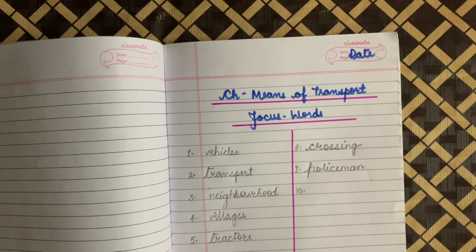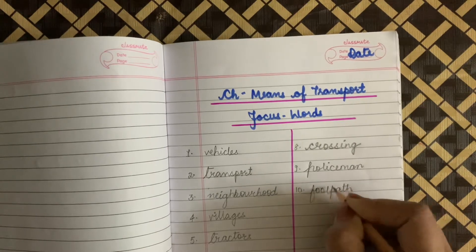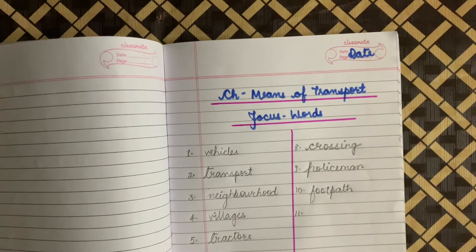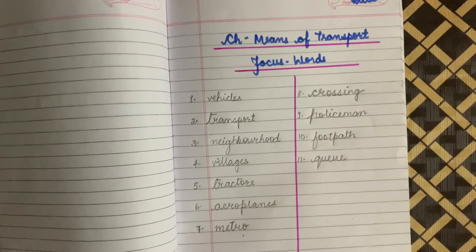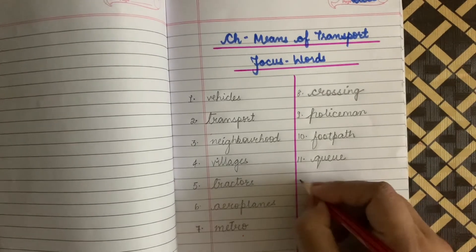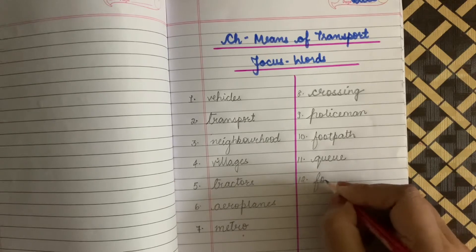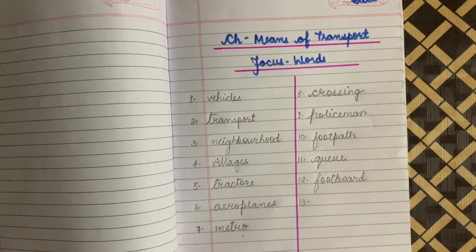Very good. Write down the next word: Footpath. F-O-O-T-P-A-T-H, Footpath. The next word is Queue — Q-U-E-U-E. Queue means line. The next word is Footboard. F-O-O-T-B-O-A-R-D, Footboard.